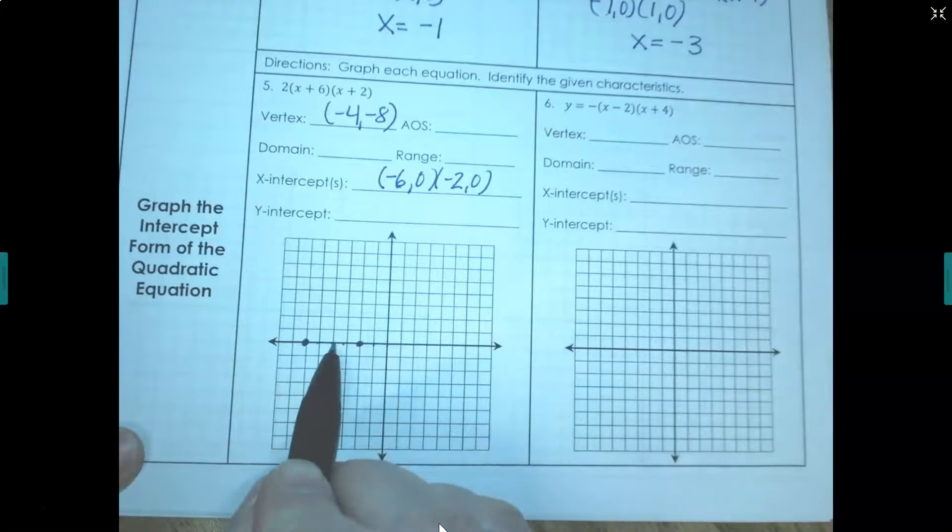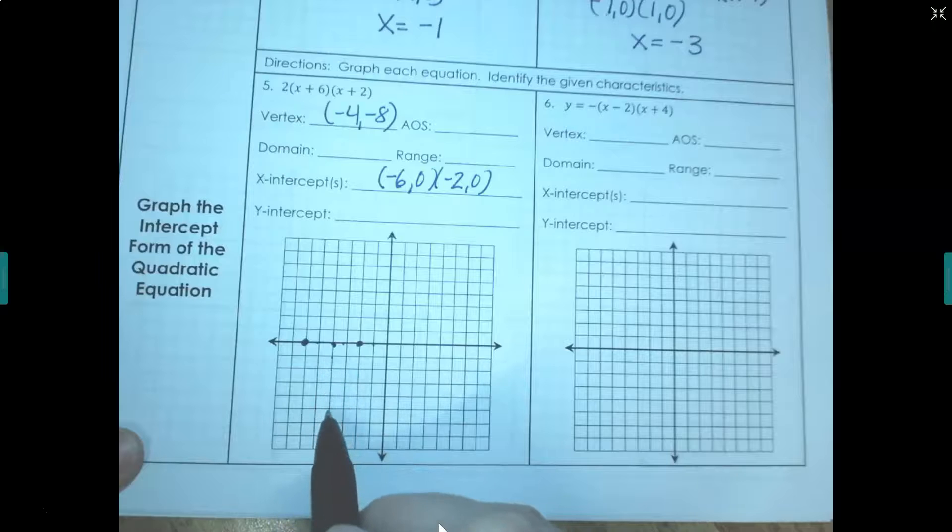1, 2, 3, 4. See how it's halfway between? That's our axis of symmetry but we do have to go down. 1, 2, 3, 4, 6, 7, 8. There's my vertex.